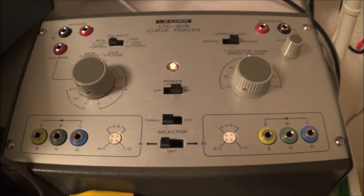Today I'm going to take a quick look at my Leader LTC 905 curve tracer. I got this used, got a pretty good deal for it. The curve tracer is used to check out transistors, diodes, FETs and so on. I'm mostly probably going to be using it to check out transistors and maybe diodes.